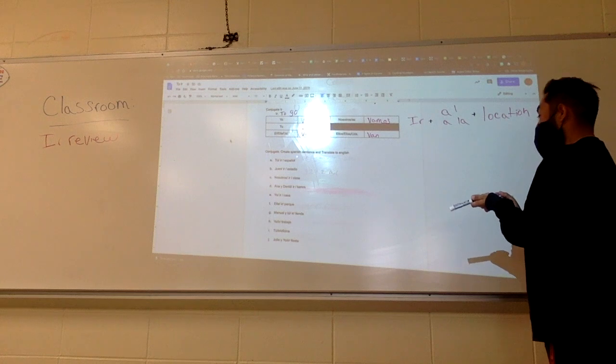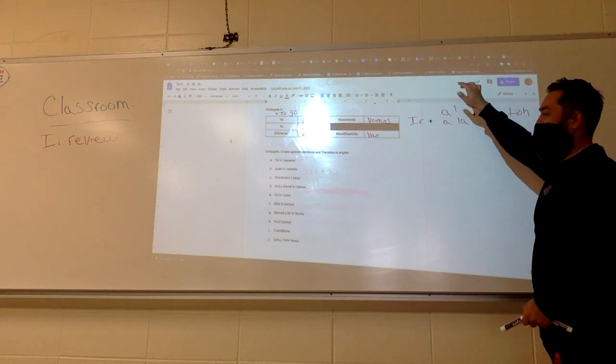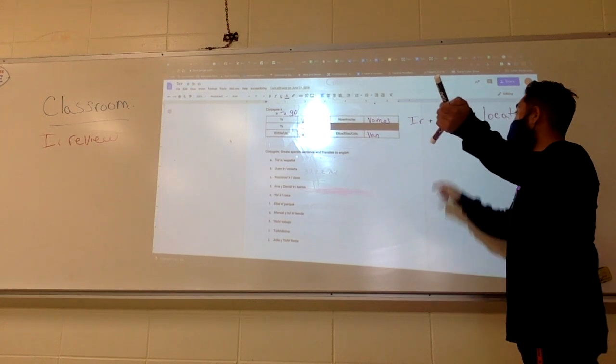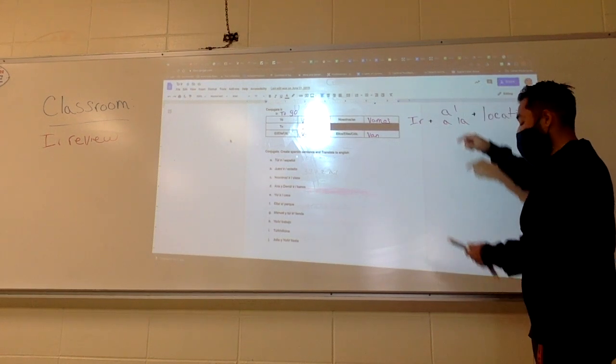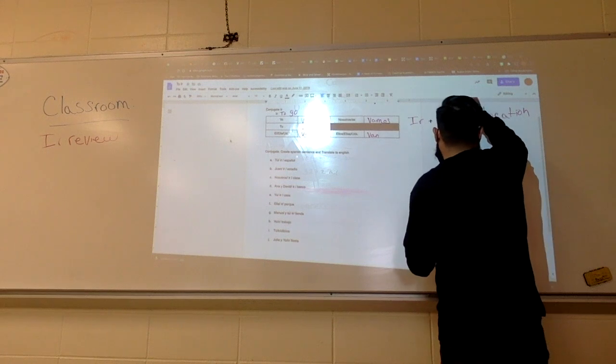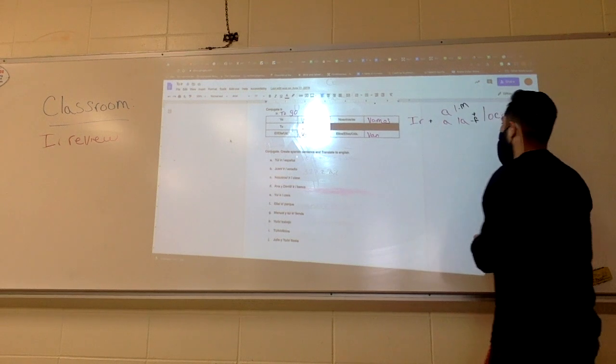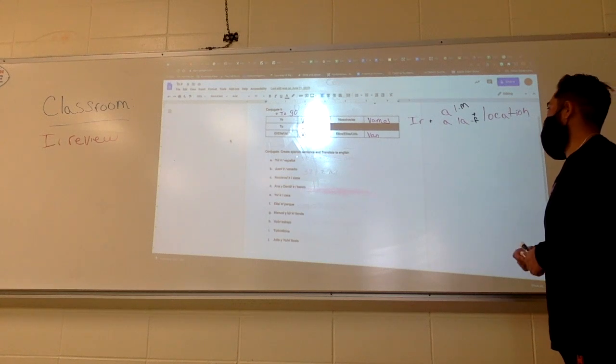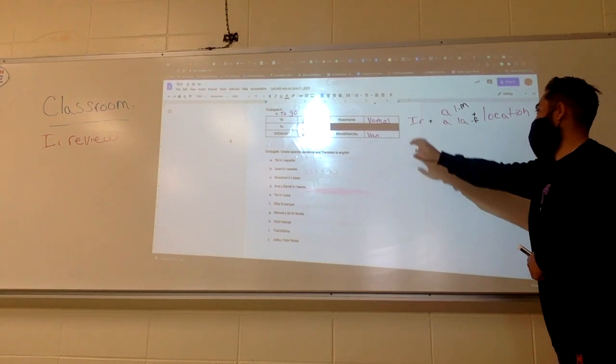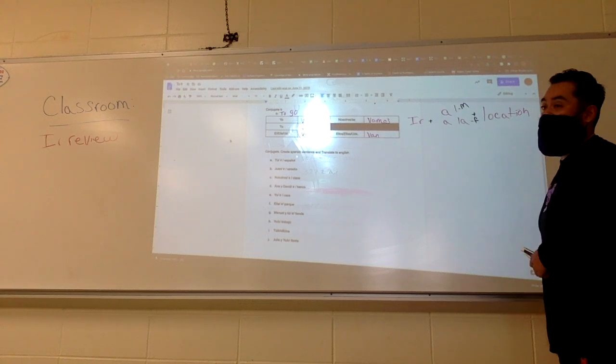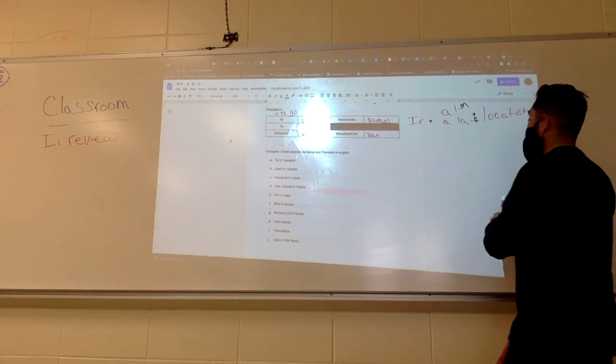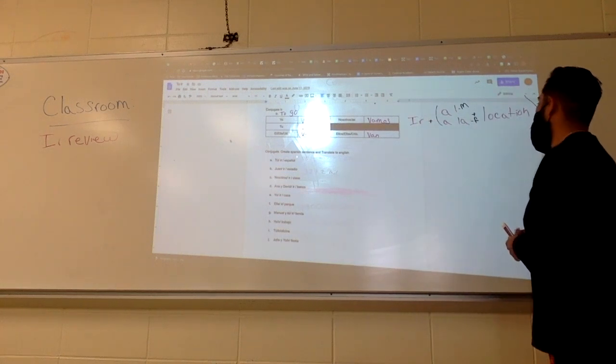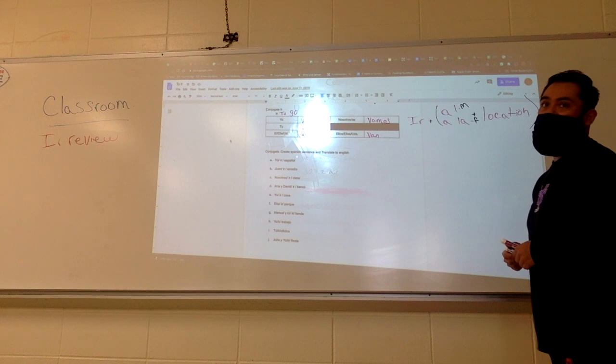Now, how do I know if I'm using al or a la? Al is masculine, a la is feminine, but they pertain to what? Masculine or feminine of it, or masculine or feminine of the location? The location. The location. I don't care who's going. It's where we're going that matters. Right?